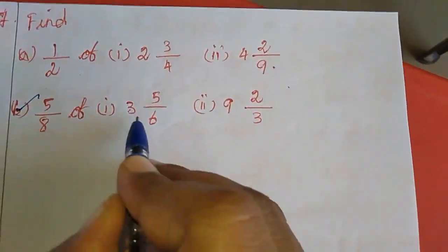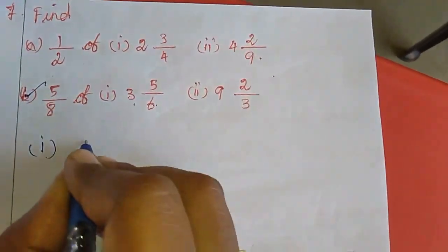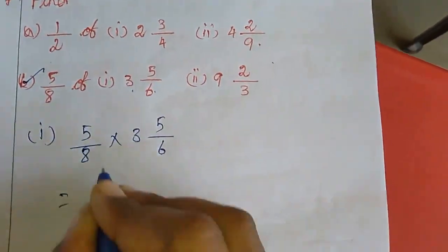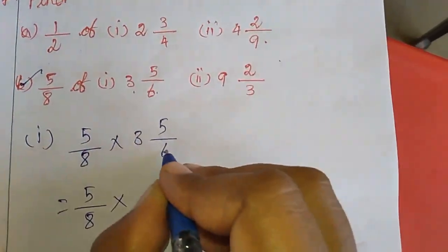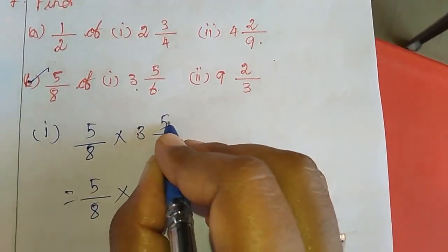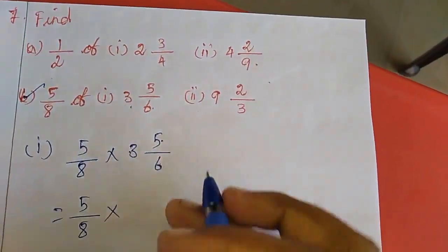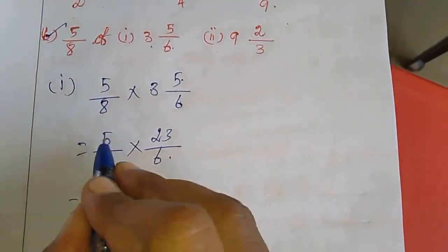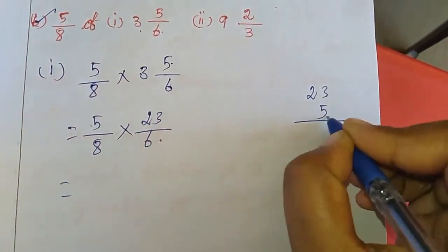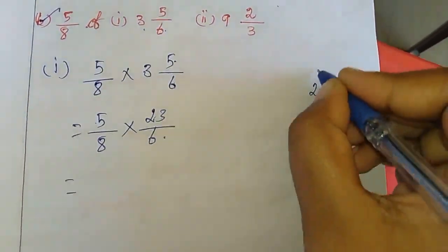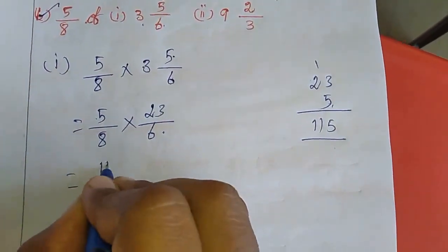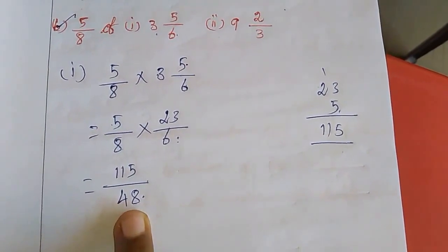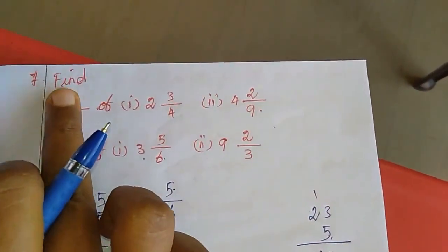Second sum: 5 by 8 of 3 and 5 by 6. Here the mixed fraction 3 and 5 by 6 — I am going to change it: 6×3 is 18, plus 5 is 23. So 23 by 6. Now multiply: 23 into 5 — 5×3 is 15, carry 1; 5×2 is 10, plus 1 is 11. So 115 divided by 48. No need to change as a mixed fraction here — they only told us to find.